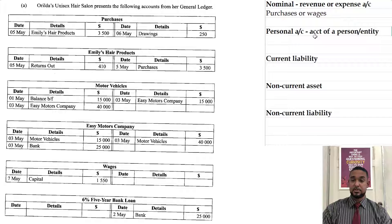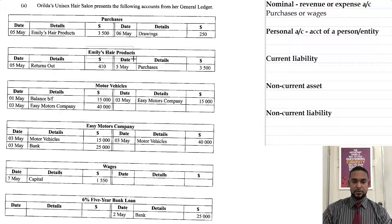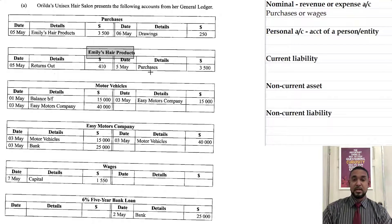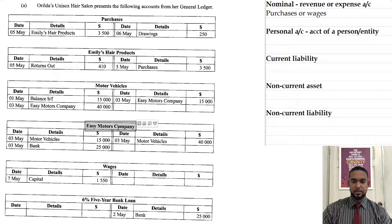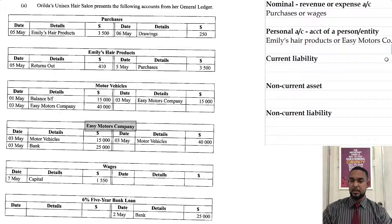Next, we have a personal account. This is an account of a person or an entity — a debtor or creditor. So I'm seeing Emily's hair products. We are Orilda's unisex hair salon, so maybe we buy products from Emily's hair products — I'm seeing a purchases figure on the credit side, so we made a credit purchase from Emily. And I'm seeing Easy Motors Company, which is probably somebody from whom we are buying motor vehicles. So we can put either of those: Emily's hair products or Easy Motors Company.